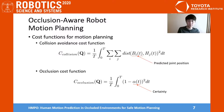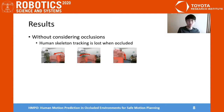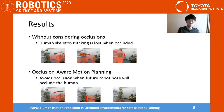Without considering occlusions, human skeleton tracking is lost when occluded, as the robot arm moves from right to left and bottom to up. Occlusion-aware motion planning, however, can avoid occlusion when future robot configurations would occlude the human. It makes the detour toward the left bottom.